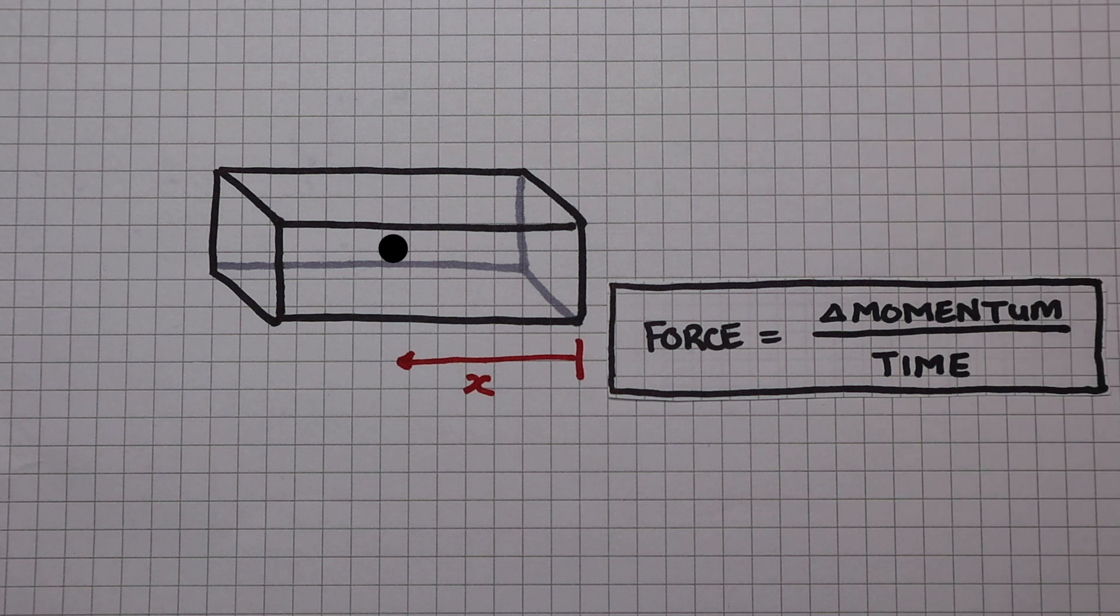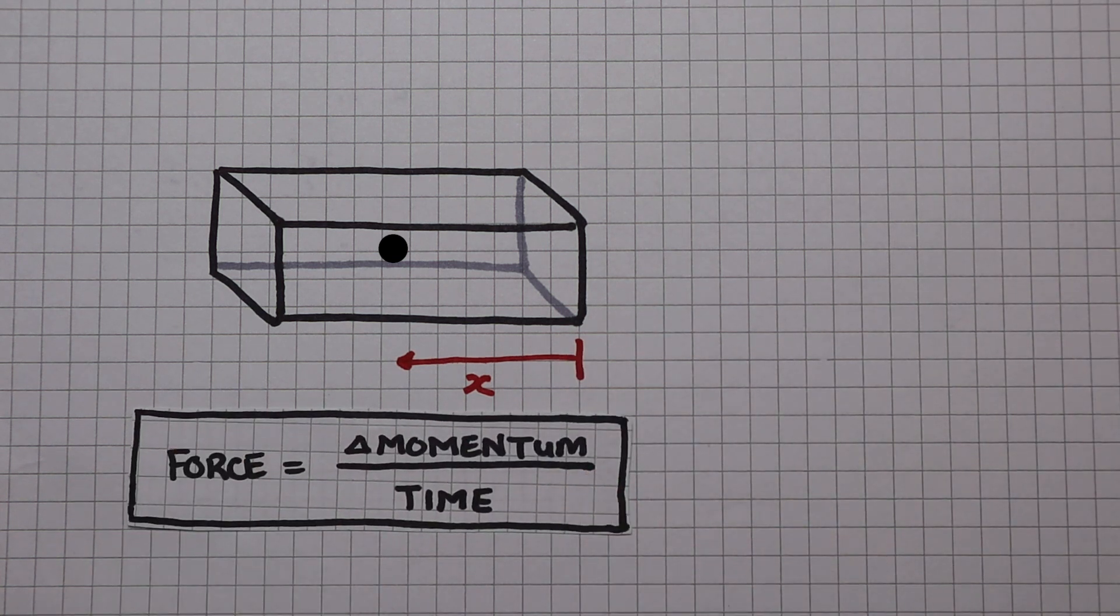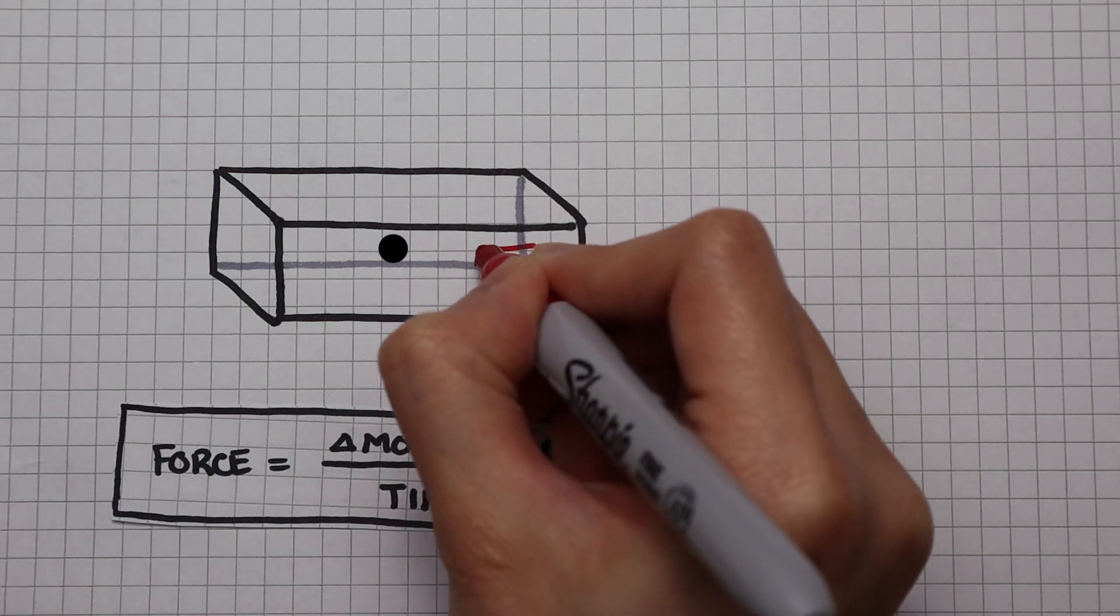I'm going to save this equation till later and begin with just looking at the momentum. If we make the assumption that this collision is elastic, when the particle collides with the wall, it rebounds with the same speed as before.